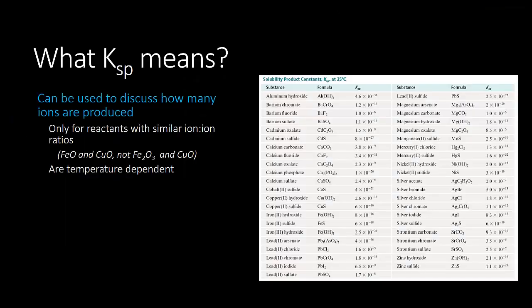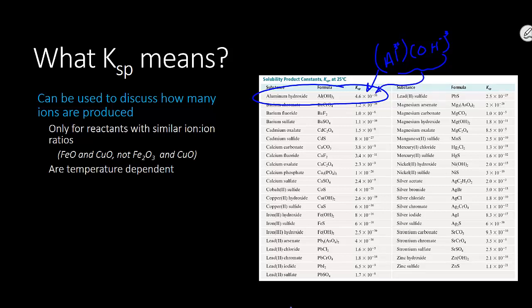KSP gives us an understanding of how many ions a particular substance places into solution. Aluminum hydroxide has a KSP value of 4 times 10 to the negative 35. That means almost all of it — 99.999...% — stays as the aluminum hydroxide formula unit. But a very small percentage turns into aluminum and hydroxide ions. Whatever product raised to the third equals something to the negative 35th, meaning only tiny amounts are made.